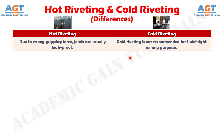Number 6: due to the strong gripping force, joints are usually leak-proof in hot riveting. Whereas cold riveting is not recommended for fluid-tight joining purposes.